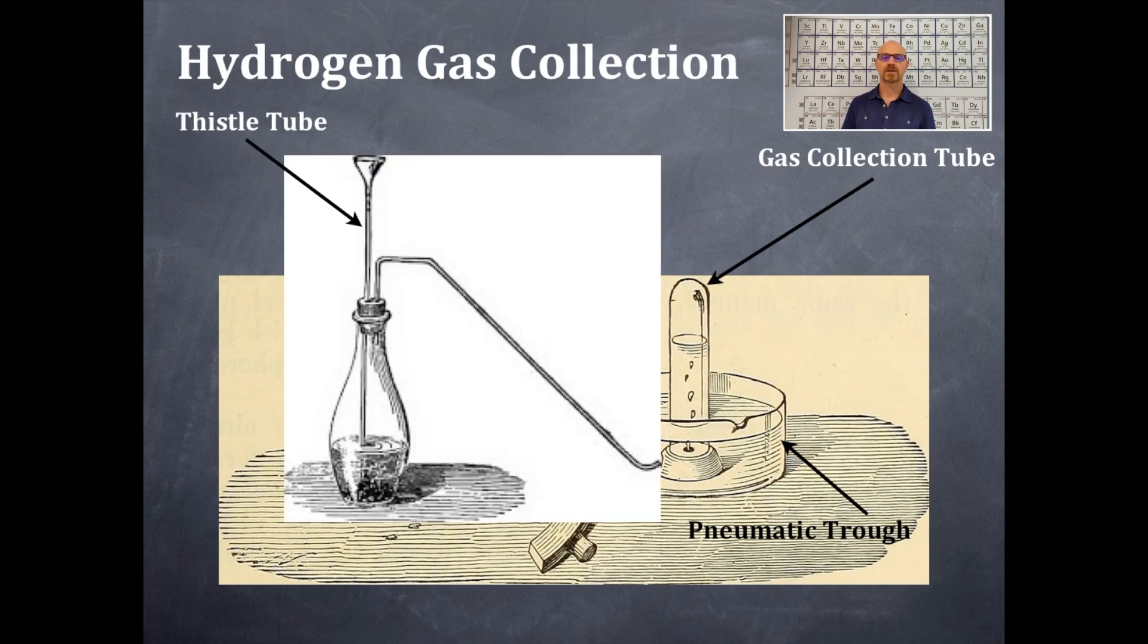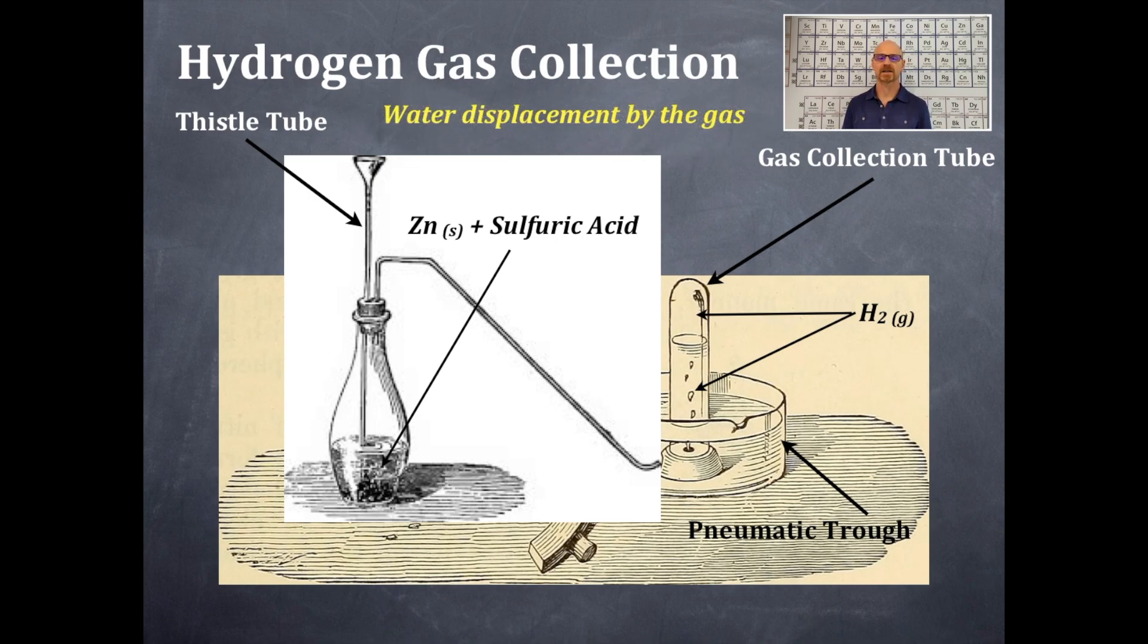Here's another way you can do this. Take a flask, put some zinc and sulfuric acid in there, and it's also attached to this pneumatic trough and inverted gas collection tube. The hydrogen gas is being generated, and you can see it at the top of the gas collection tube. This is water displacement by the gas, so it's displacing the water and pushing it out while the gas fills it up.